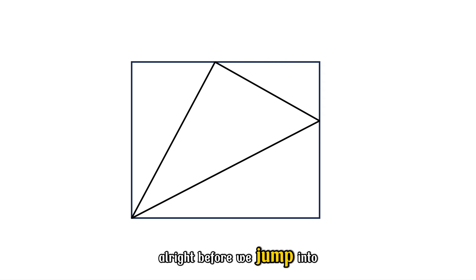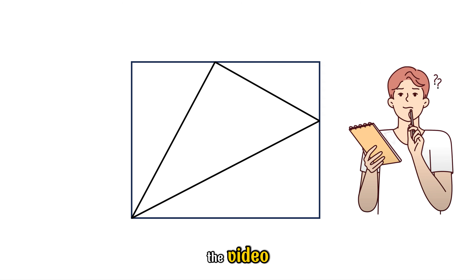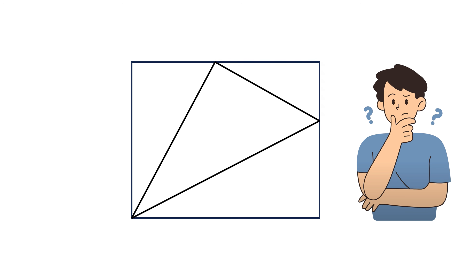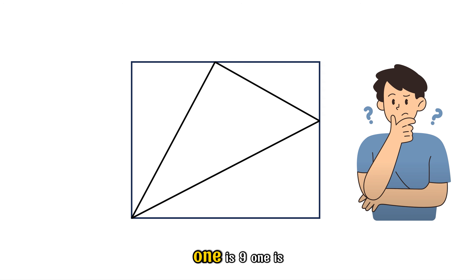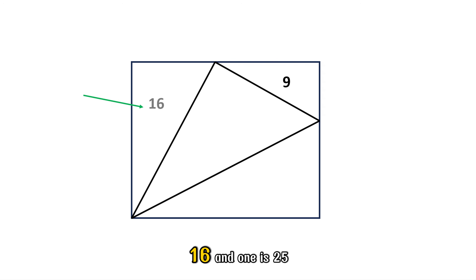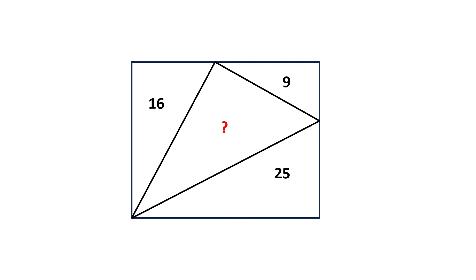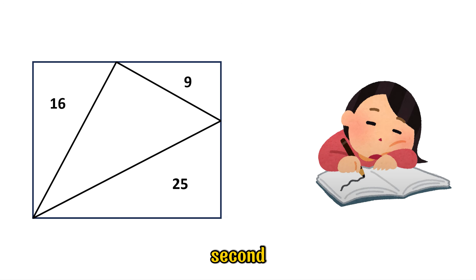All right, before we jump into the video, here's a fun challenge for you. Inside a rectangle, we can form four triangles. We already know the areas of three of them — one is 9, one is 16, and one is 25. The question is: what is the area of the triangle in the middle? Think about it for a second.